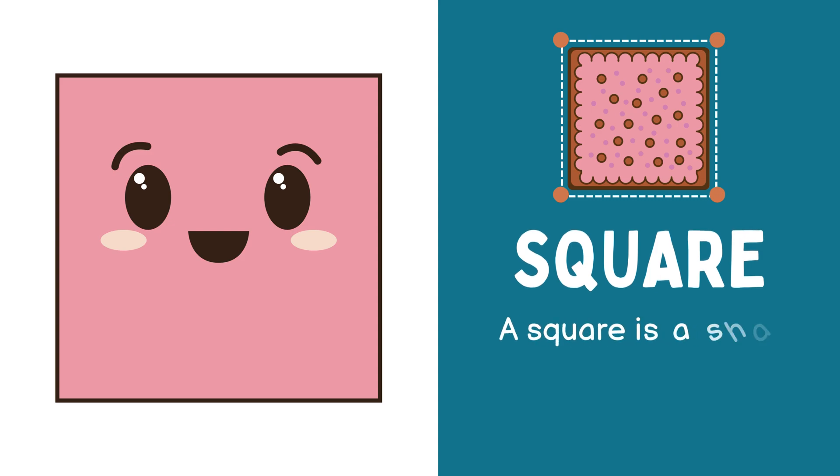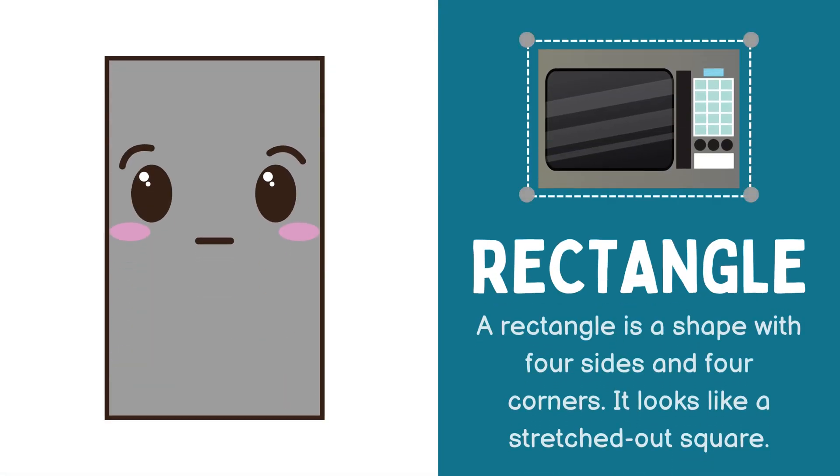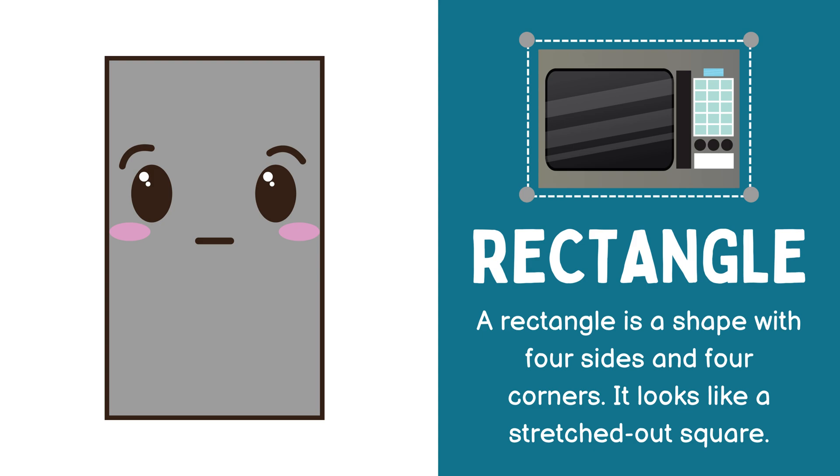Next shape, square. A square is a shape with 4 equal sides and 4 corners. Next shape, rectangle. A rectangle is a shape with 4 sides and 4 corners. It looks like a stretched out square.